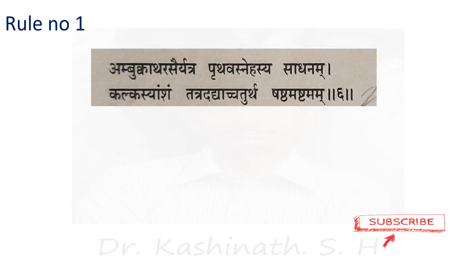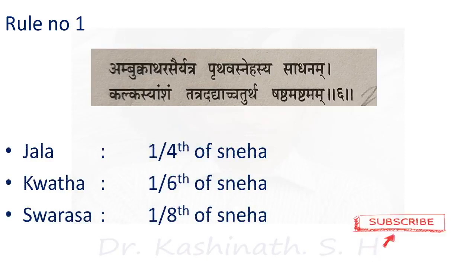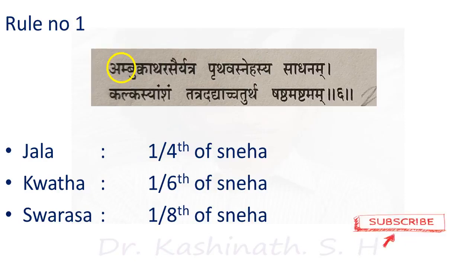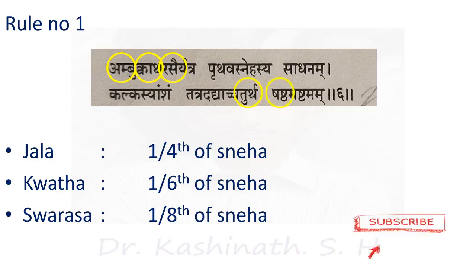Certain rules must be followed in pharmaceutical procedures: Ambu Kvatha Rasair Yatra Prutak Sneha Sya Sadhanam Kalka Syamsam Tatradya Chaturtha Shashta Ashtakam. Depending on the type of Drava Drava, the quantity of Kalka Drava changes. If Ambu (Jala) is used as Drava Drava, Kalka Drava is one-fourth of Sneha. If Kvatha is used, Kalka Drava is one-sixth. If Swarasa is used, Kalka Drava is one-eighth — that is, one-fourth, one-sixth, and one-eighth.